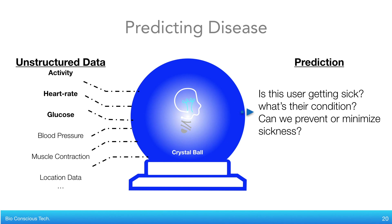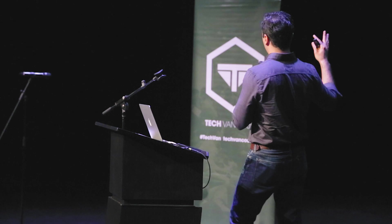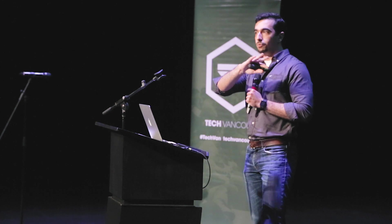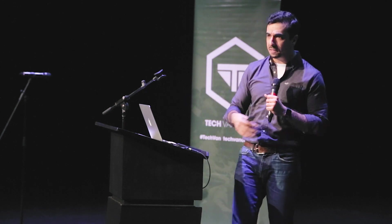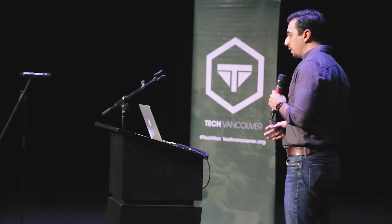Three years ago, when I was a master's student at UBC for computer science, I had this crazy idea that what if we had a computer algorithm called the crystal ball, and what if we could feed unstructured data to the crystal ball — let's say activity, heart rate, Apple Watch data, and all that stuff — and then on the other hand, it could tell us if we're going to get sick, when we're going to get sick, what condition we're going to have, what kind of disease we're going to have, and if we could potentially prevent it.